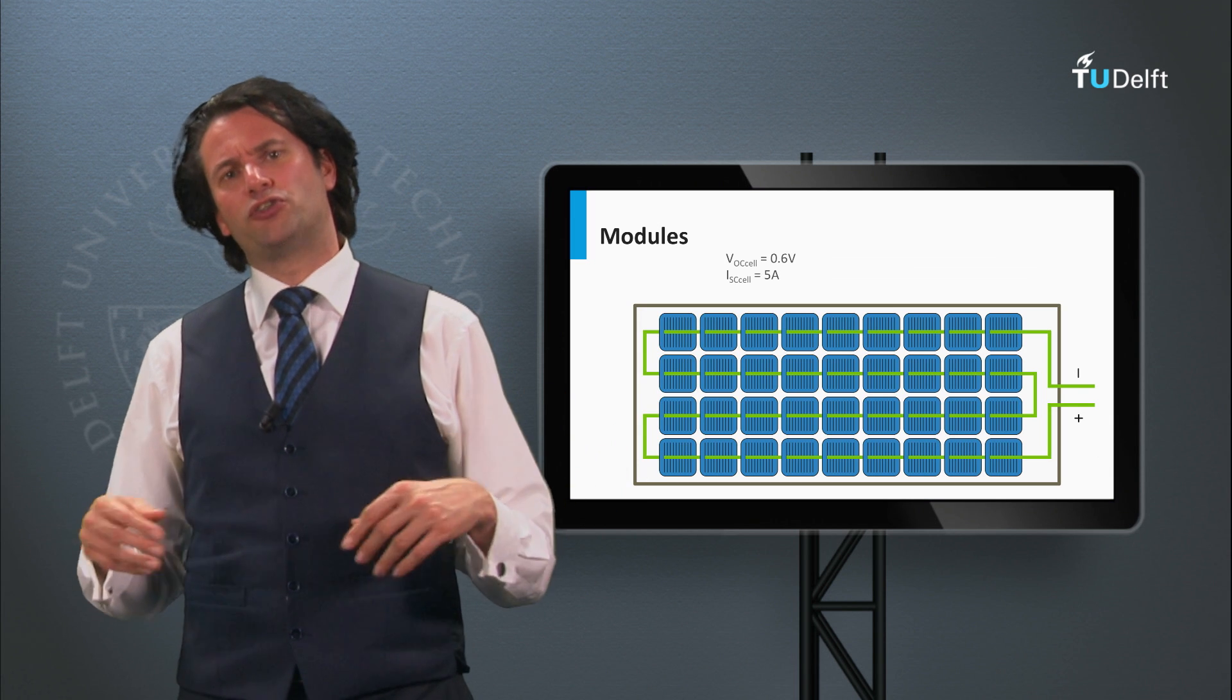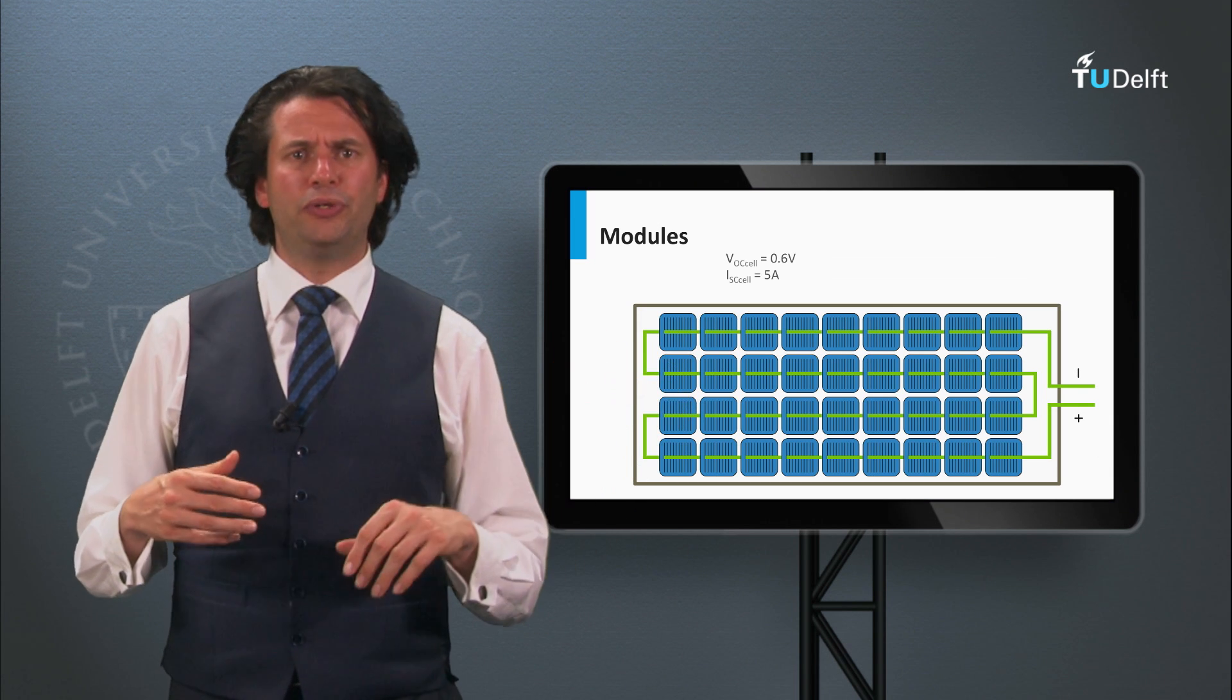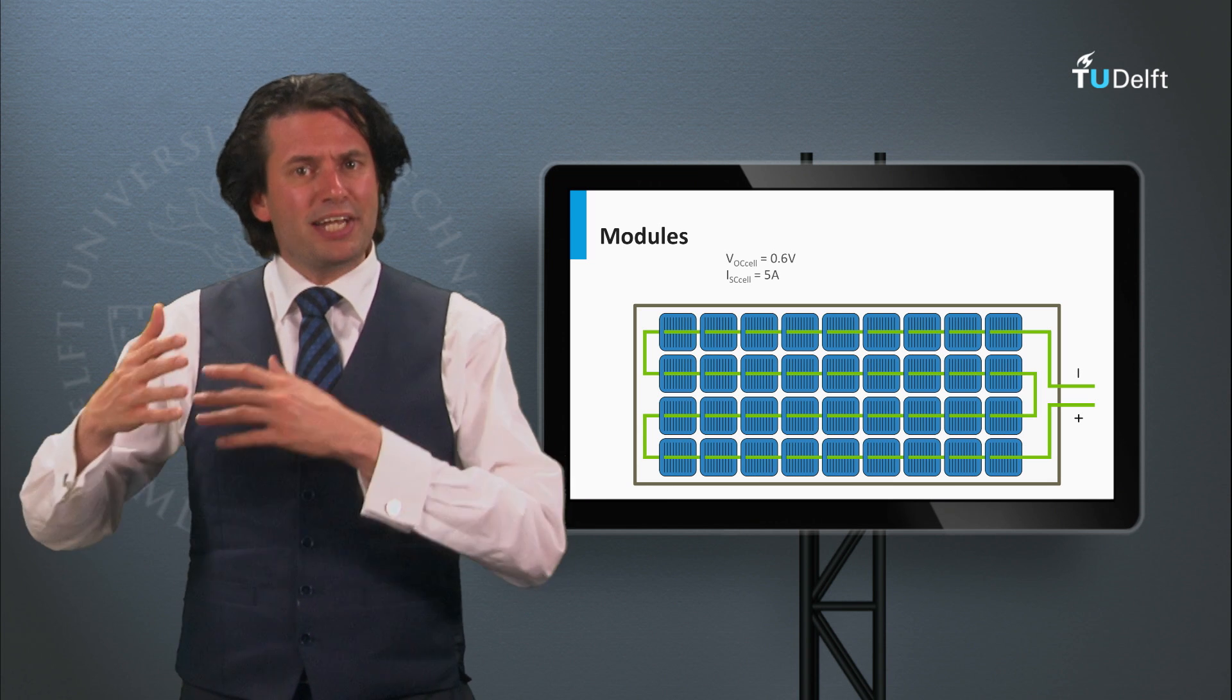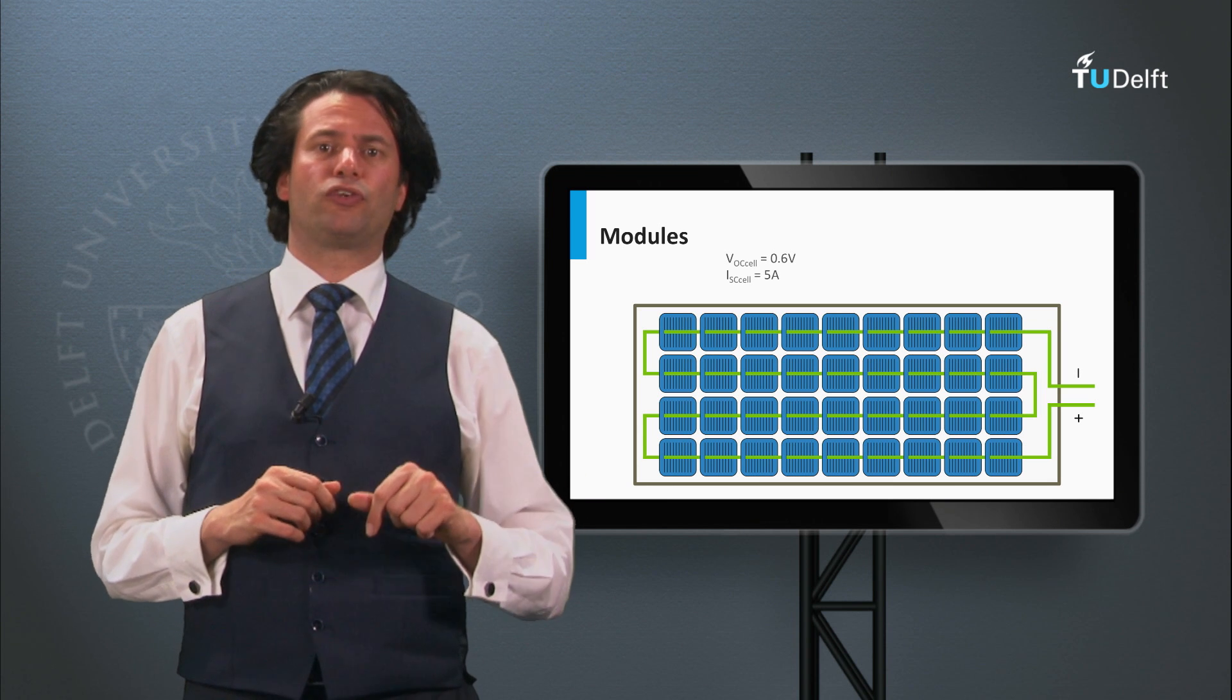This means that if we consider a module, you can partly tune the voltage and the current output by the arrangements of the connections of the solar cells.